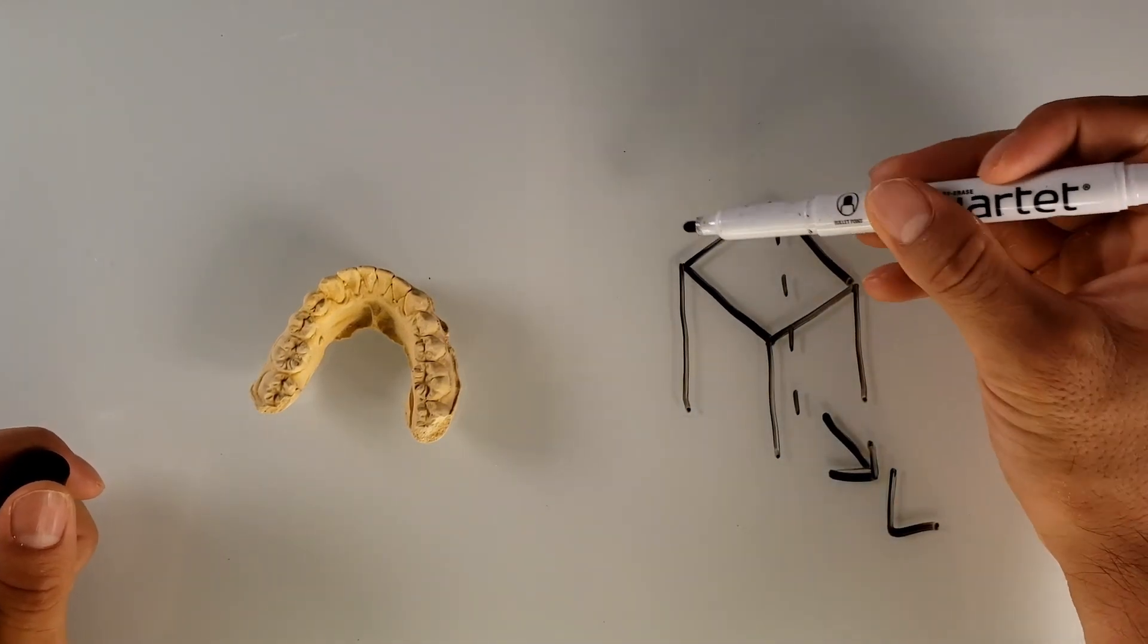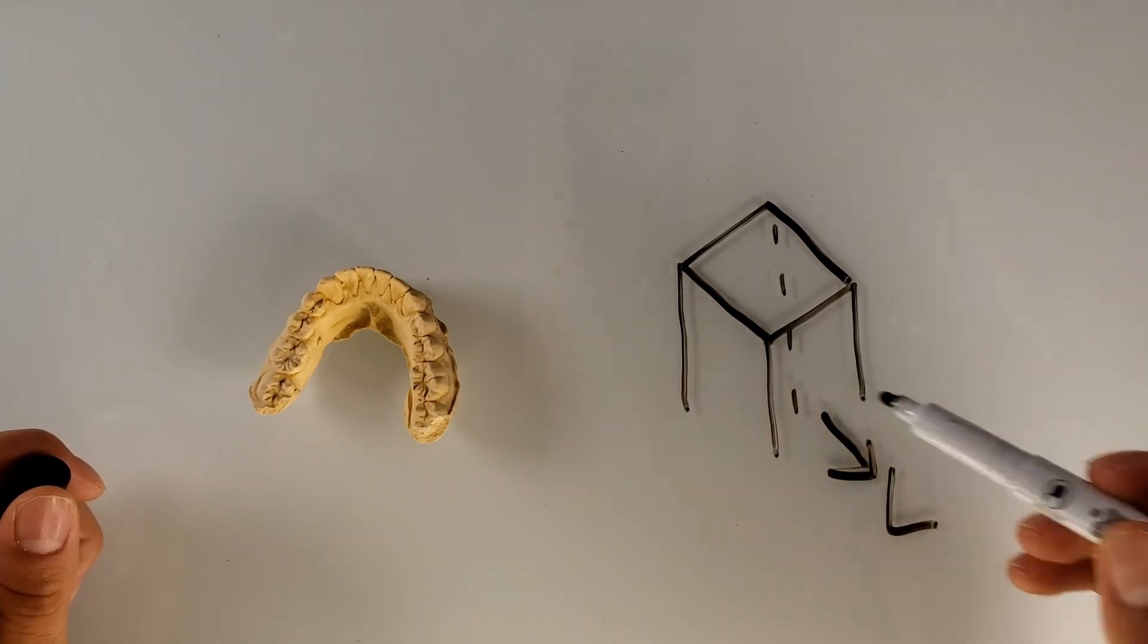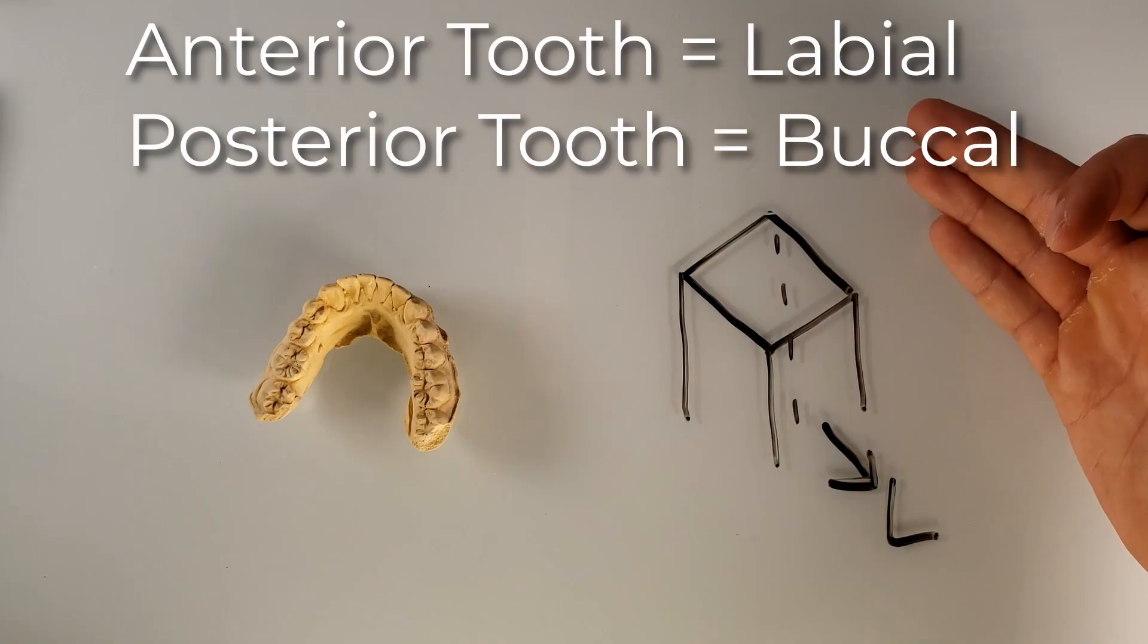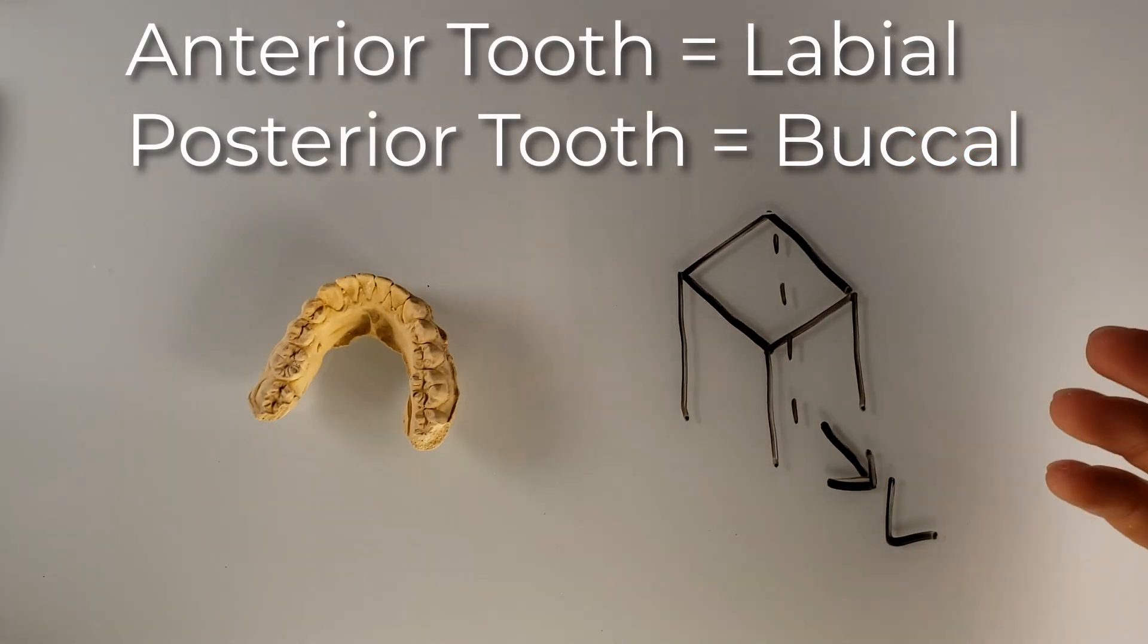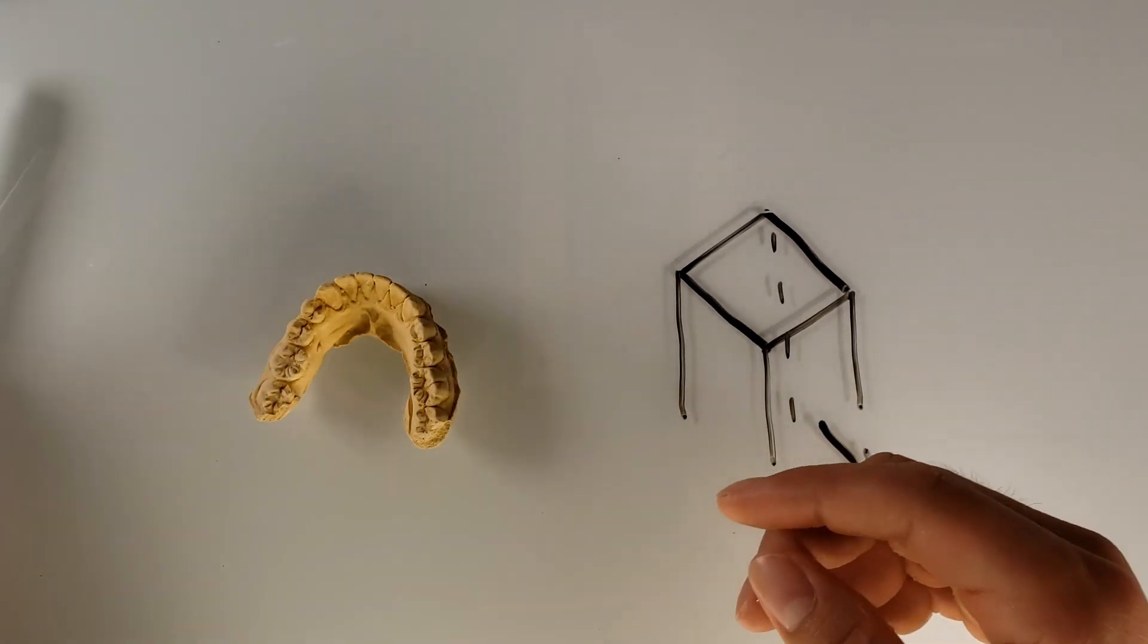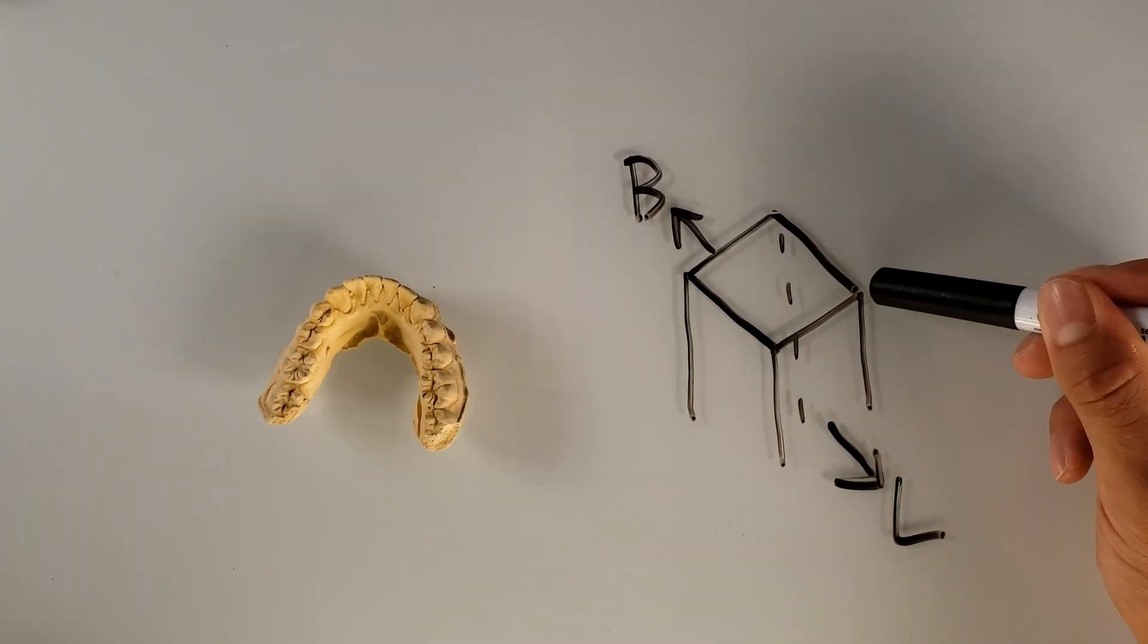Now, what about this opposite side, the face that we cannot see? Well, it depends on being an anterior or posterior tooth. Anterior will be labial and posterior, like what we have here, will be buccal for the cheek. So here, let's draw that. All right, so that's buccal.